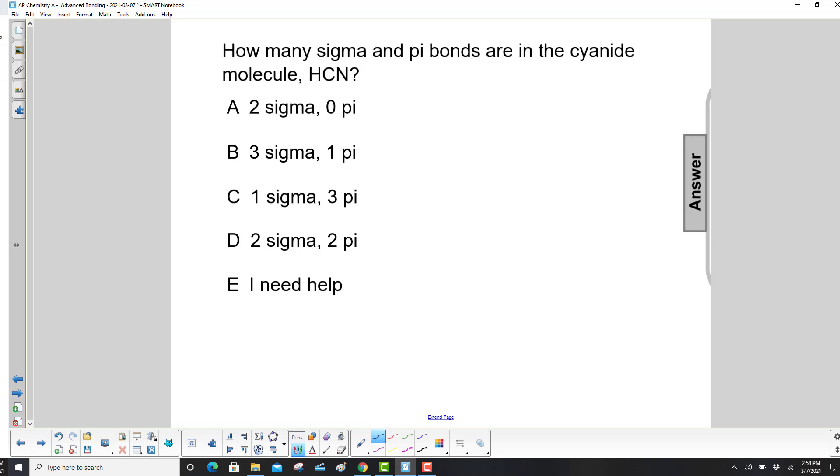How many sigma and pi bonds are in the cyanide molecule HCN? Well, first we have to draw it, right?